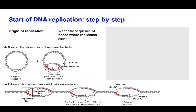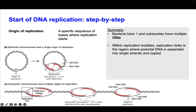In eukaryotic chromosomes we have multiple origins of replication. All of these different specific sequences allow a replication bubble to form and DNA synthesis to start. So to review: bacteria have one origin of replication, and eukaryotes have multiple origins of replication, which are sometimes abbreviated as ORIs.